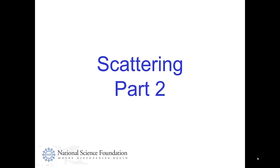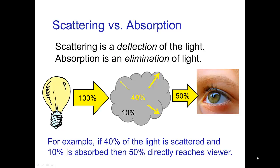Scattering Part 2. It's important to make the distinction between scattering and absorption. If we have a light source and the light is passing through a cloud, some of the light is scattered away from the viewer and some of the light is actually absorbed — the energy in that case is absorbed. So we also have a reduction of light by absorption.